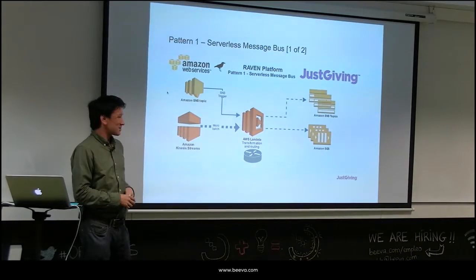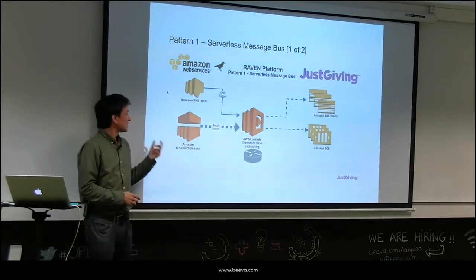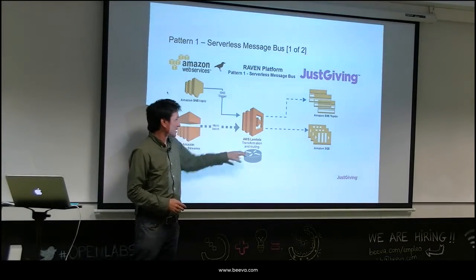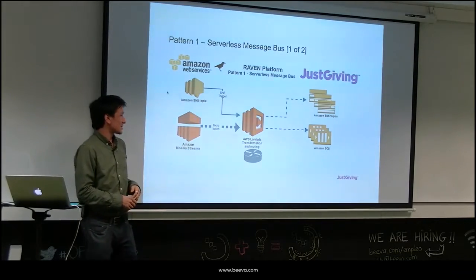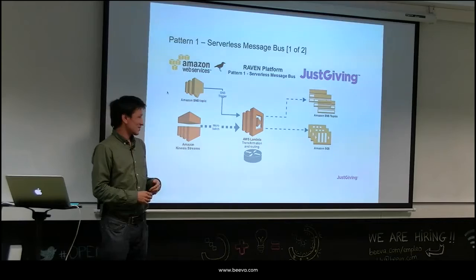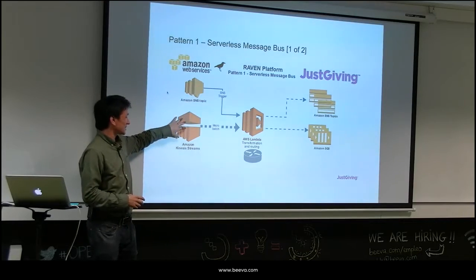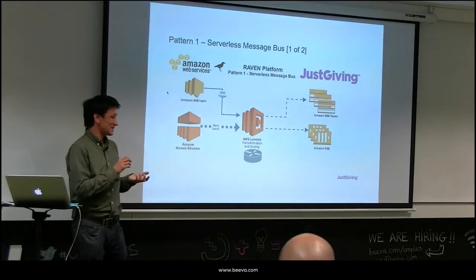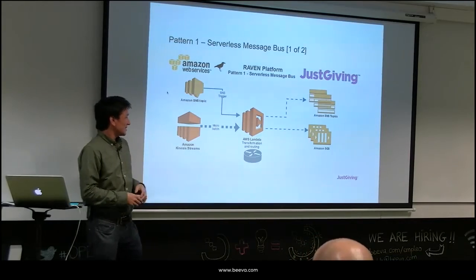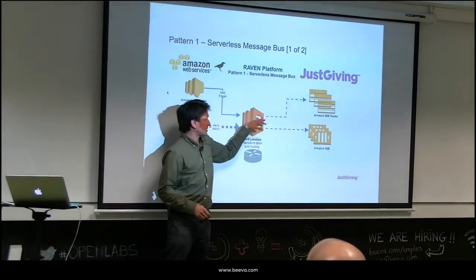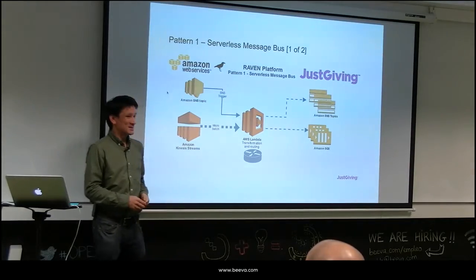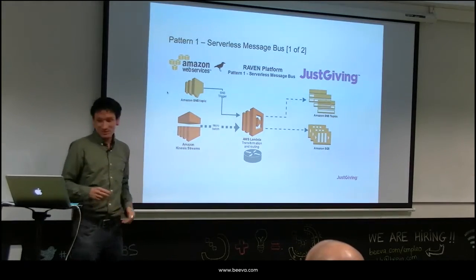A slightly more interesting way is to use Kinesis Streams as your message bus. You get a micro-batch into the Lambda and do routing and transformation of the message. For example, you could get all department and client data coming in, but only want financial data to go to one specific queue — a nice pattern for this routing use case.